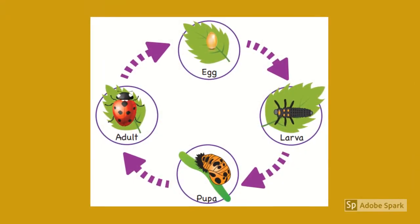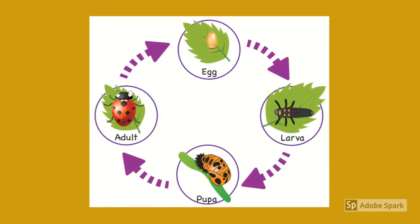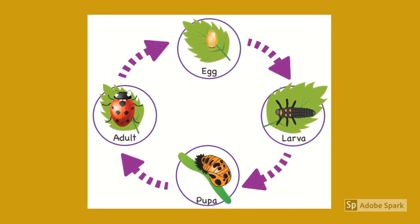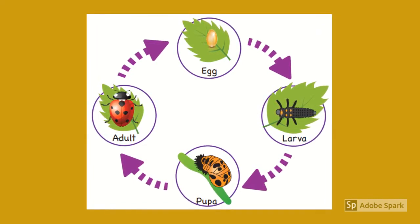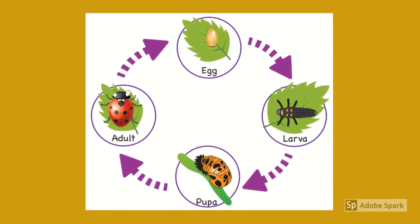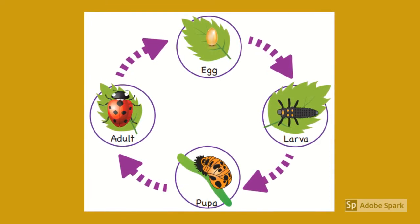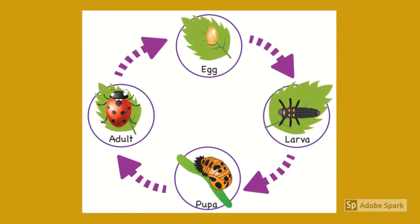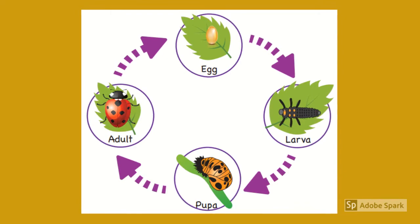Most insects go through four stages of growth during their lives. They start as an egg, then they become a larva, then a pupa, and finally they're an adult. For some insects, the pupa stage has a special name, like chrysalis for a butterfly or cocoon for a moth.